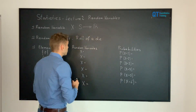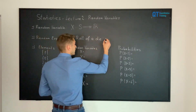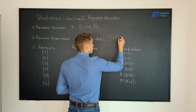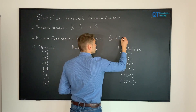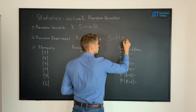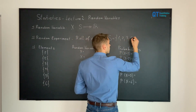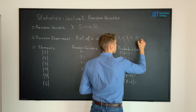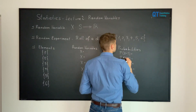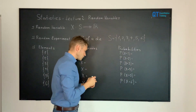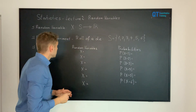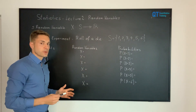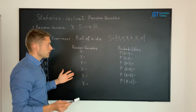So the sample space for the roll of a die, S, has six different elements going from one, two, three, four, five, and the last one of course is six. Basically this random experiment has six different elements.